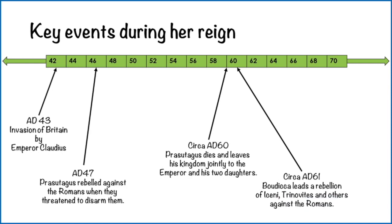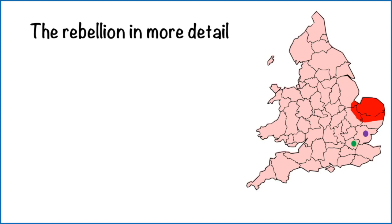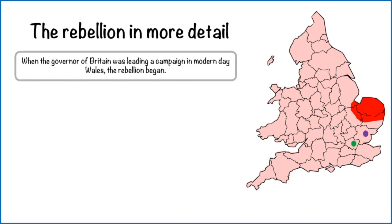So what comes next is probably not a great deal of surprise. AD 61: Boudicca leads a rebellion of Iceni, Trinovantes and some others against the Romans. When we look at this in more depth, we need to remember that the Iron Age people themselves didn't write things down, and the Roman accounts should be taken as rather one-sided. When the Governor of Britain was leading a campaign in modern-day Wales, the rebellion began. Boudicca was joined by other tribes who did not like the Romans, including the Trinovantes, whose territory was directly south of the Iceni. They had been badly treated, including being made to pay for a large Roman temple in Camulodunum.